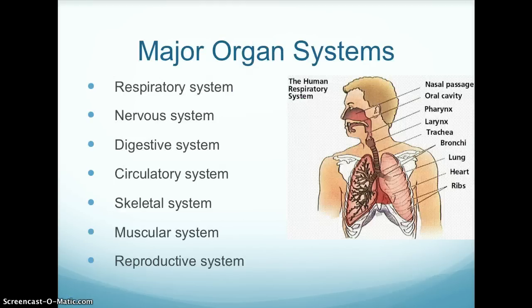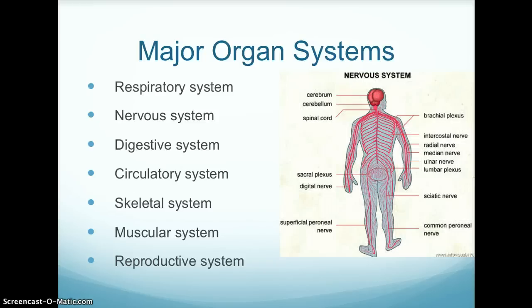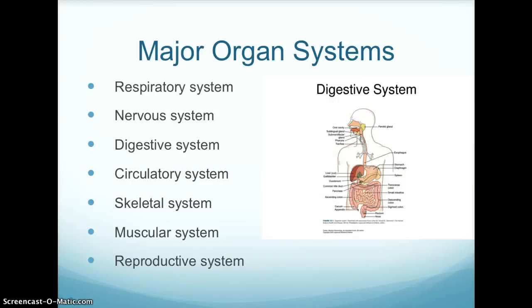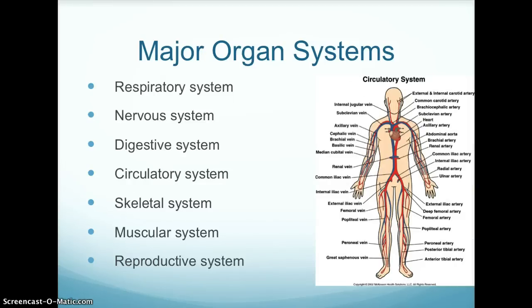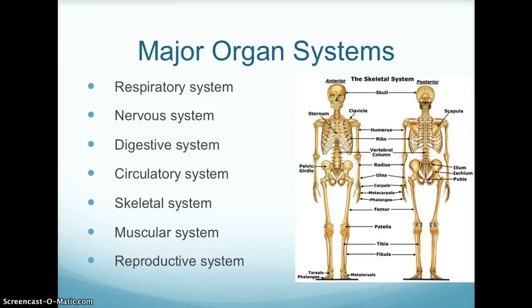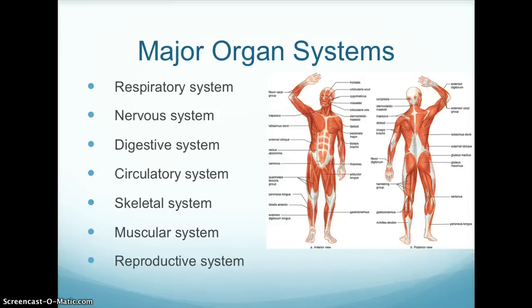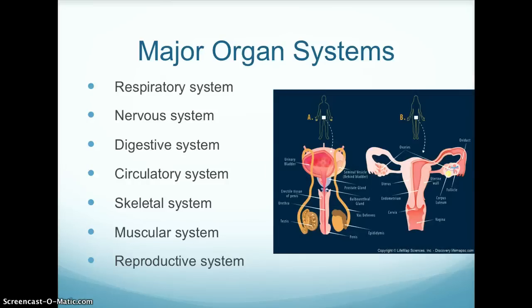The major organ systems of the body include the respiratory system, the nervous system, the digestive system, the circulatory or cardiovascular system, the skeletal system, the muscular system, and the reproductive system.